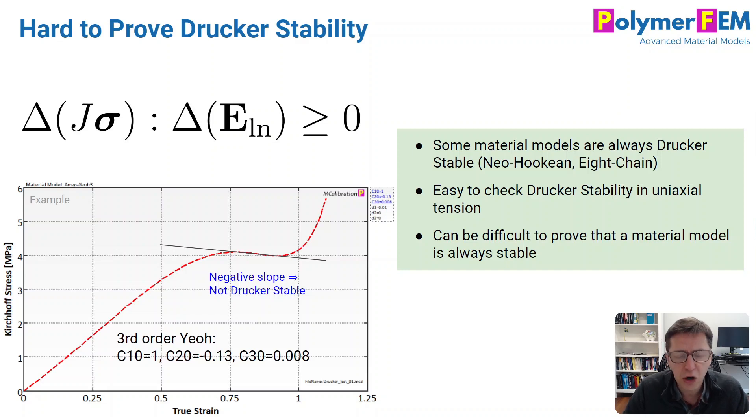And that's something that's actually hard to prove mathematically because this has to be valid for any increment of strain and then the corresponding stress increment. And that's difficult to prove because it's hard to prove that for all conditions. Uniaxial tension is easy to graphically show it, but it should apply for any deformation mode, not just uniaxial tension.